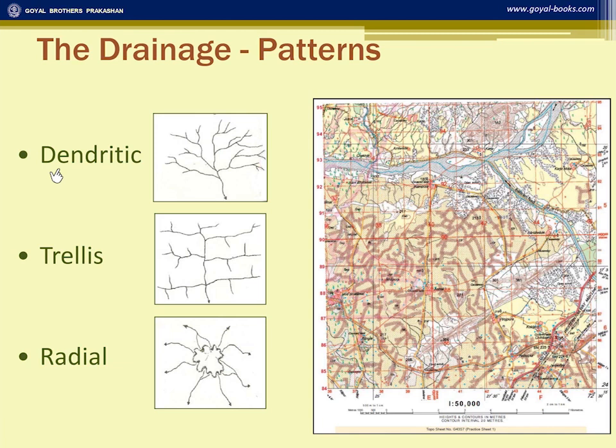In the trellis pattern, the tributaries join the main river at a right angle, or almost at a right angle, as you can see in grid square 404. In the radial pattern, the tributaries come out from a hill in a circular manner. You can see the example in grid square 3985.